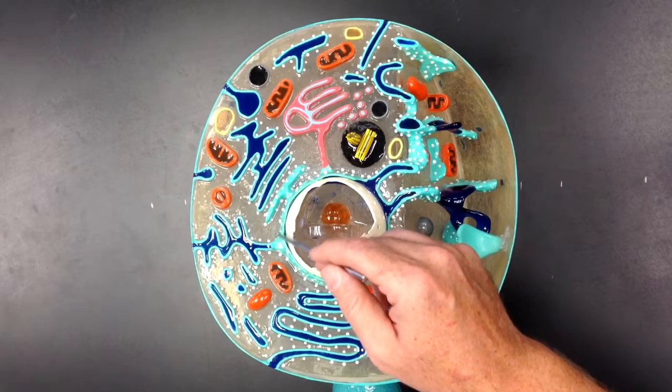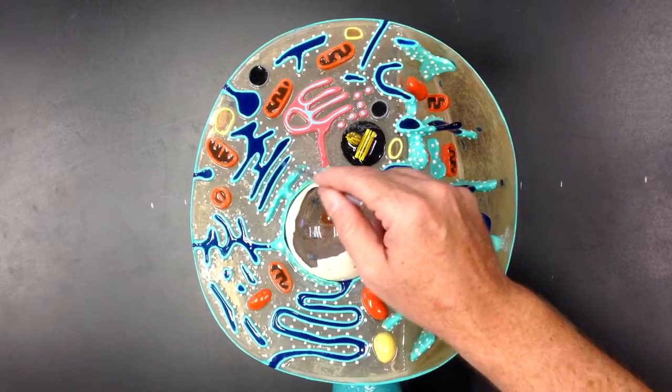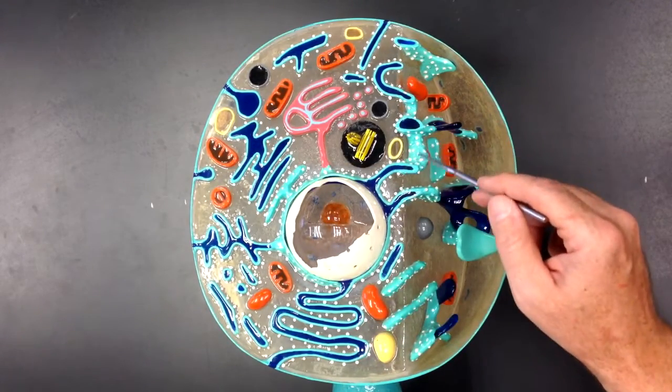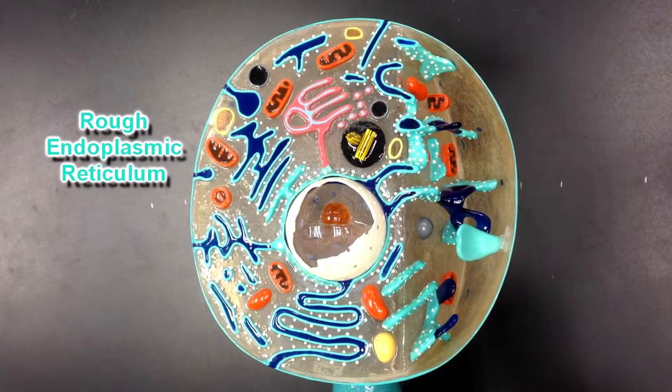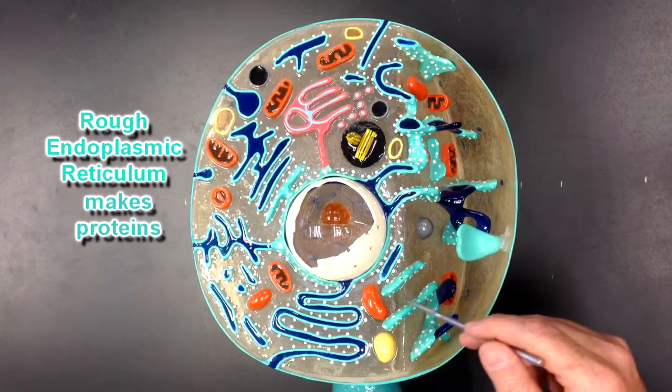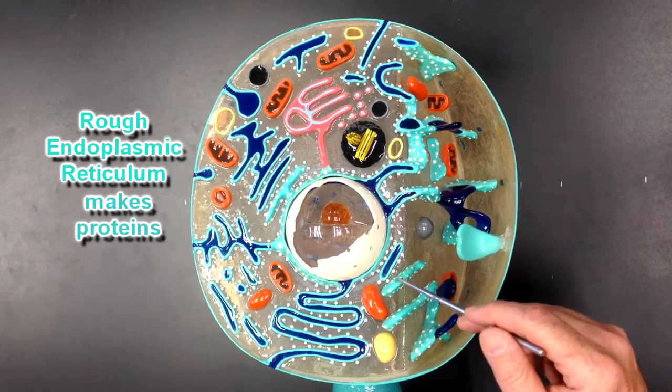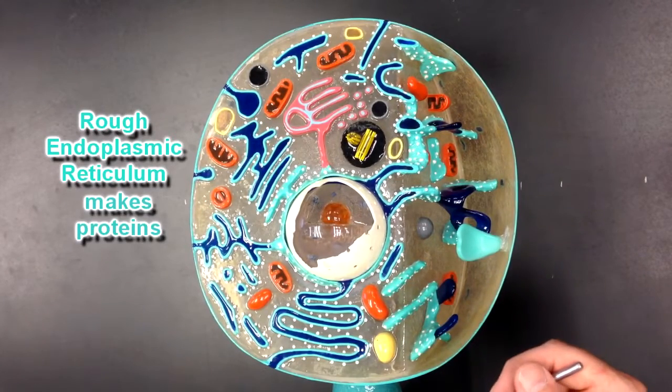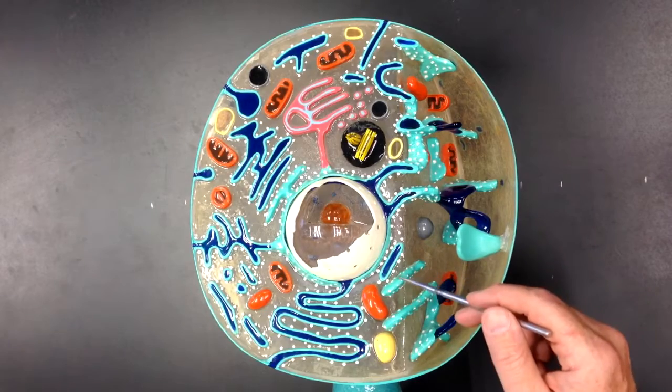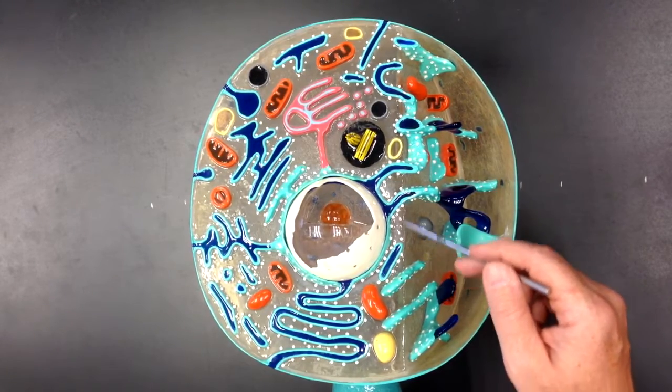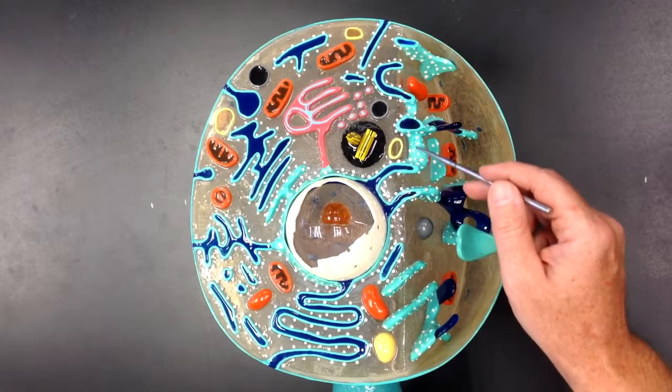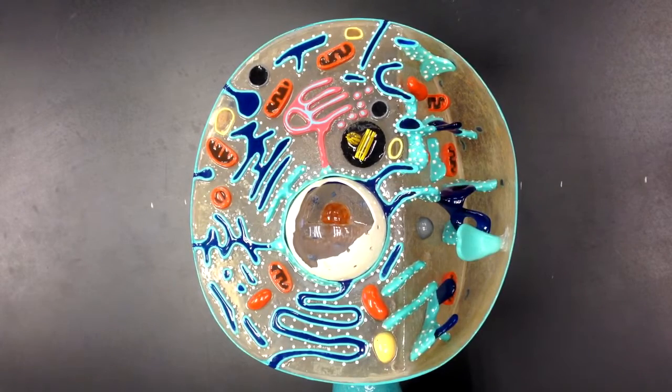We've got this blue structure with many ribosomes stuck to it. All this blue structure here is rough endoplasmic reticulum. The rough endoplasmic reticulum is responsible for making proteins. The ribosomes will help to make the proteins and the proteins will be stored inside these little chambers in the rough endoplasmic reticulum.